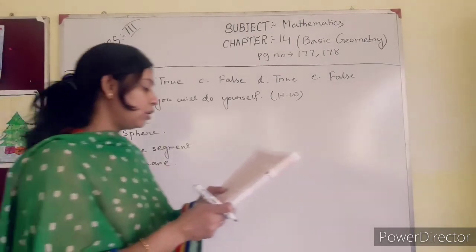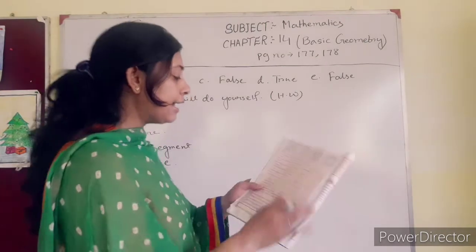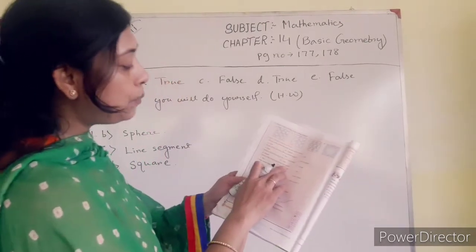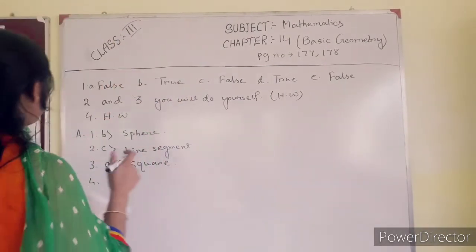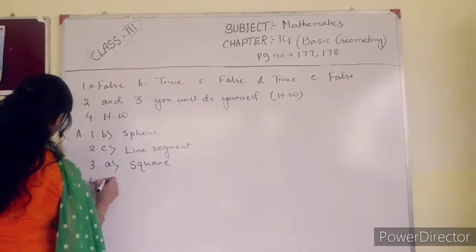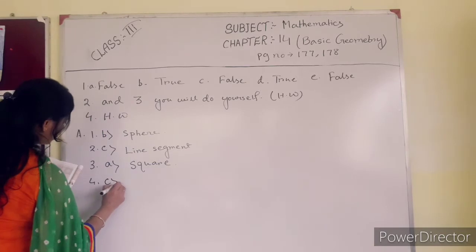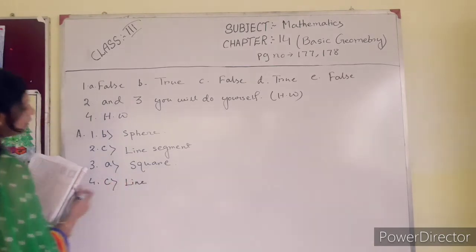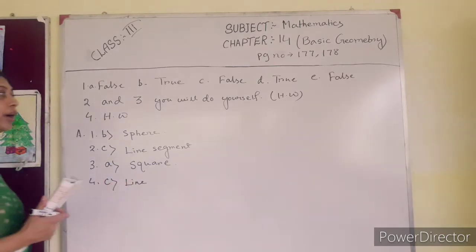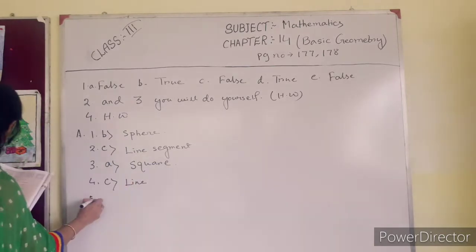Number 4: which of the following has no end point? The answer is C — a line. A line has no end point.